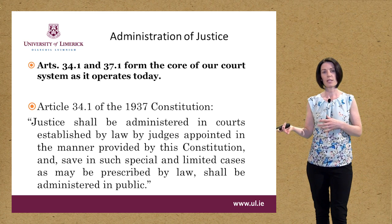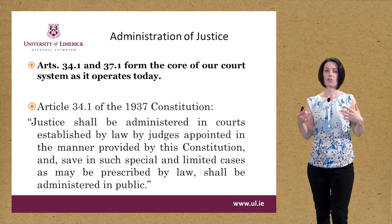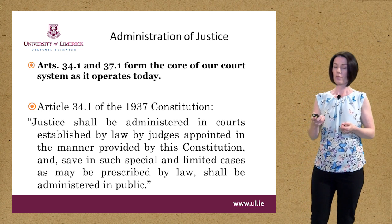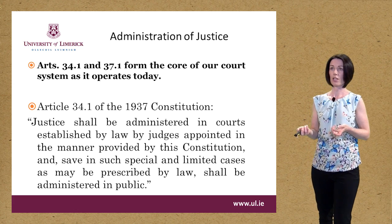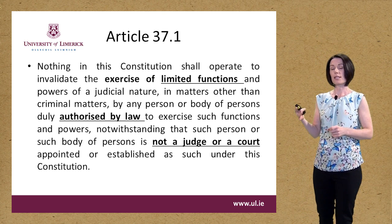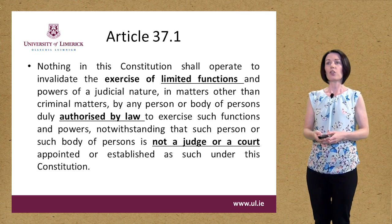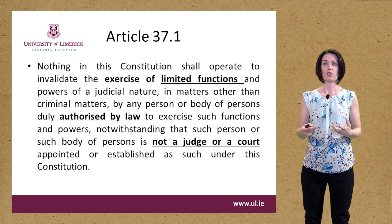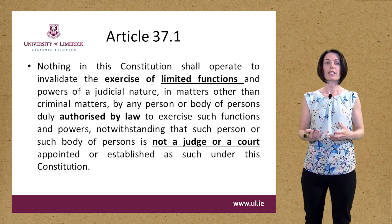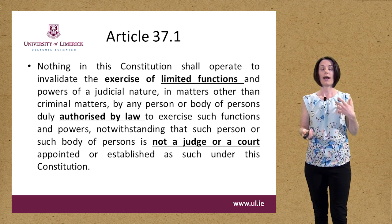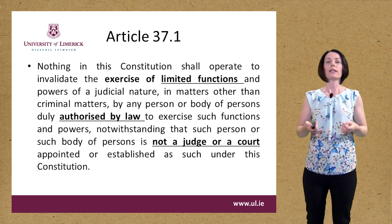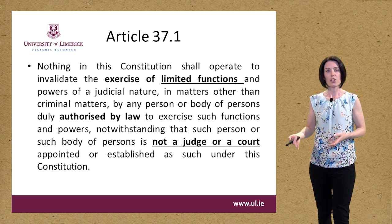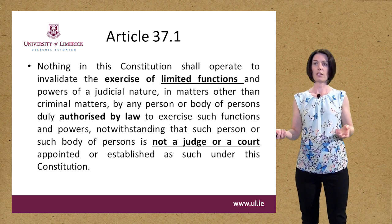There are a number of important functions here. First: justice shall be administered in courts, so we must have a court system — by judges — and shall be heard in public. Article 37.1 basically says that nothing in the Constitution shall operate to invalidate laws that provide limited functions to other bodies to act in a judicial-like capacity, except in criminal matters.